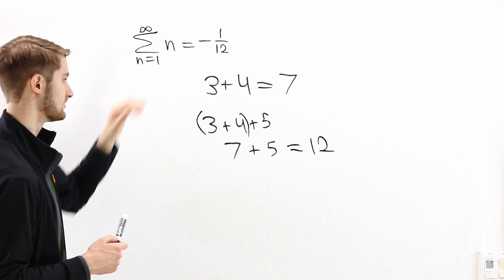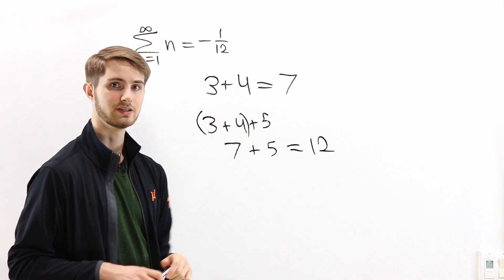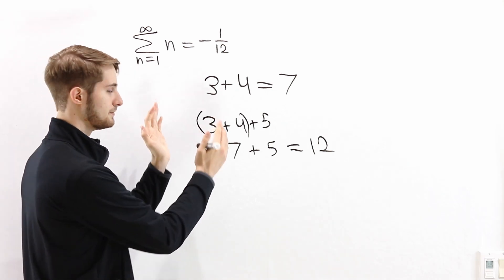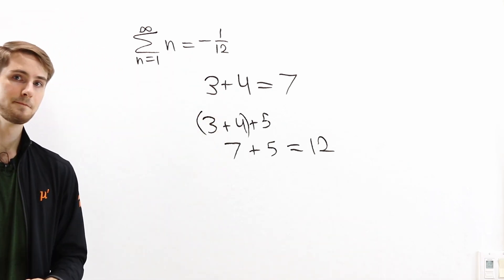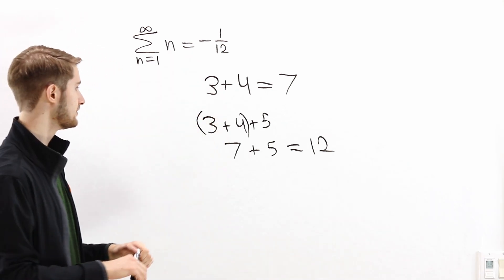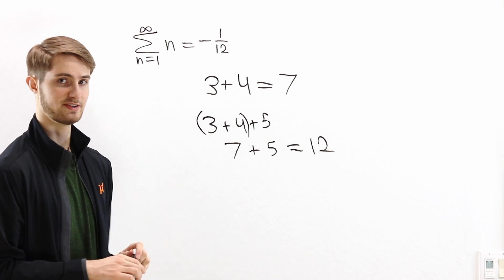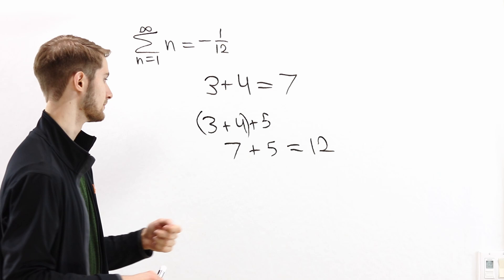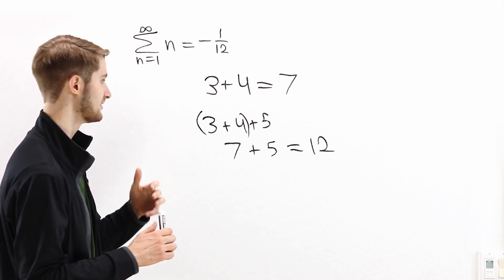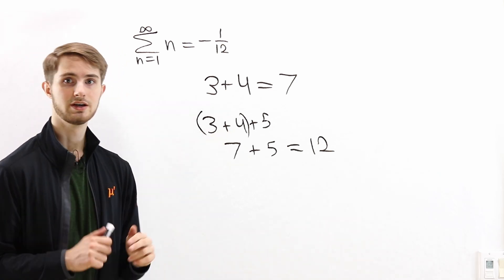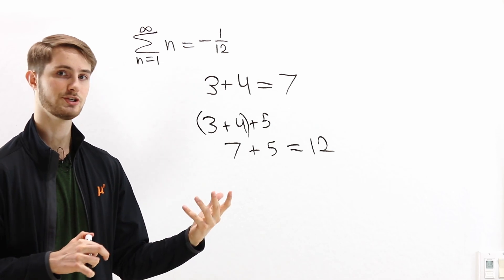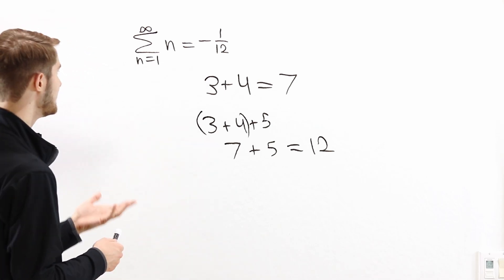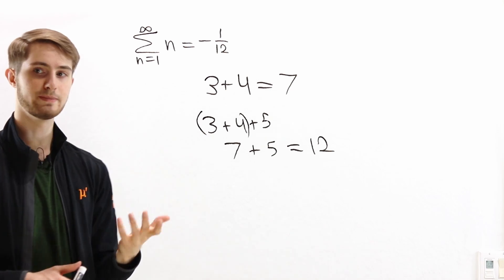When we have an infinite sum, this kind of reasoning doesn't really work, because you would have infinitely many pairs of numbers to add. If we have finitely many pairs of numbers to add, we can define the result inductively or recursively. But if we have infinitely many pairs, then that kind of inductive definition doesn't work. So we need a different way to think about adding infinitely many numbers.